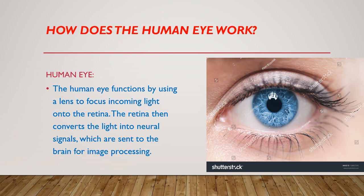How does the human eye work? The human eye functions by using a lens to focus incoming light onto the retina. The retina then converts the light into neural signals, which are sent to the brain for image processing.